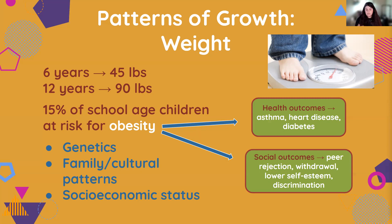Other contributors include genetics, as well as family and cultural patterns of food consumption and exercise — what cultural foods are embedded in a family's culture, and how much playing sports or physical activity is emphasized. Socioeconomic status also plays a role: parents may resort to quick foods that are higher in fats because they are cheaper and more convenient and readily available. In terms of outcomes of obesity, health risks include asthma, heart disease, and diabetes. There are also social outcomes — as kids enter the school-age group and are around peers, they might experience peer rejection, withdrawal, lower self-esteem, and discrimination in their daily lives.